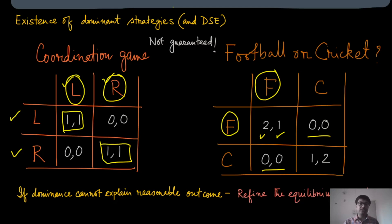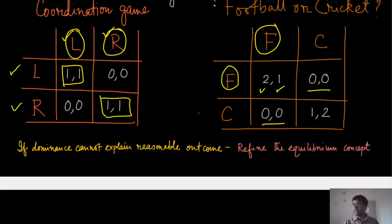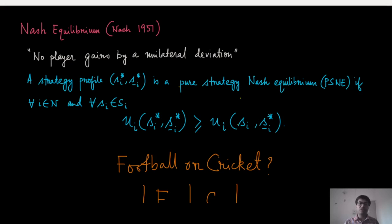So what do we do in these cases? Dominant strategy equilibrium cannot guarantee any predictable outcome here. When dominance cannot explain a reasonable outcome, we refine the equilibrium concept — we make it a little less strict — so we can capture a predictable outcome even in games like the coordination game or football/cricket game. This brings us to the concept of Nash equilibrium, one of the most famous ideas of game theory, invented by John Nash in 1951. The key idea: no player gains by unilateral deviation in a Nash equilibrium.